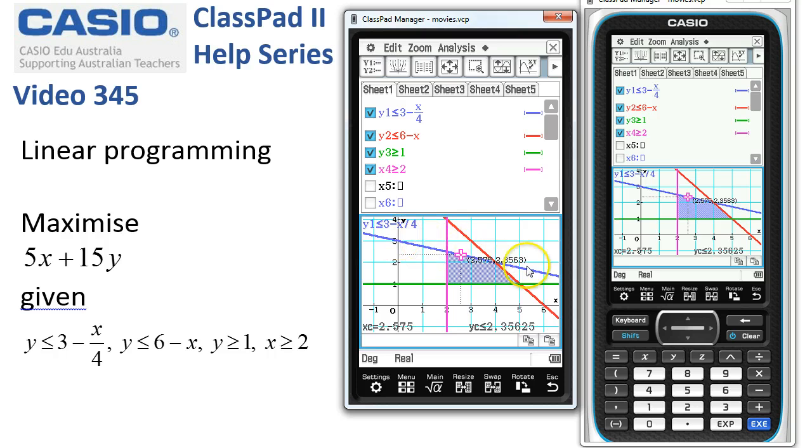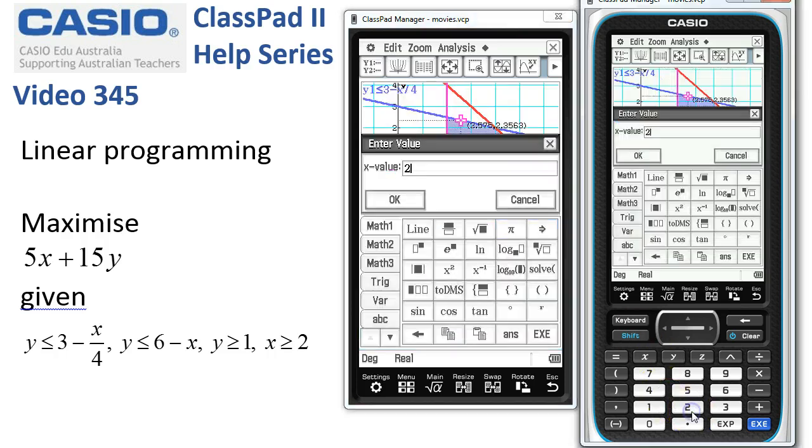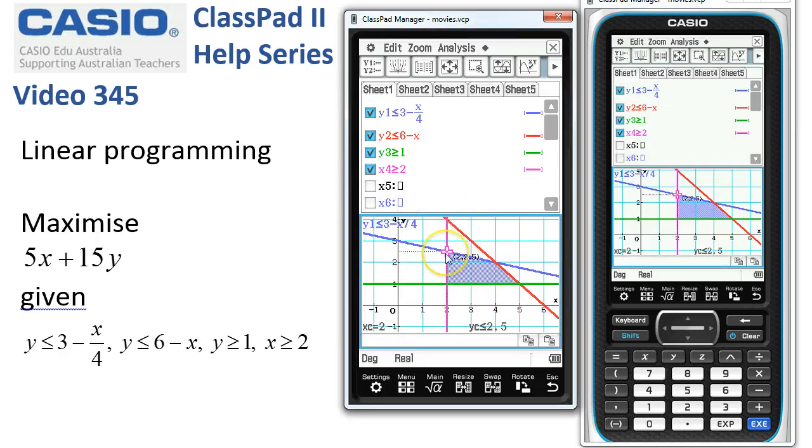ClassPad has come in onto this line. And now we know this is where x is 2. So we're going to tap the 2 button, say OK. And there's that point of intersection at 2, 2.5.